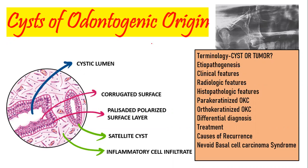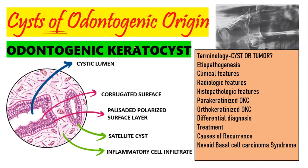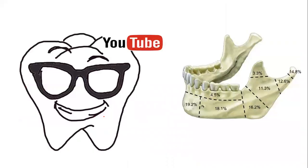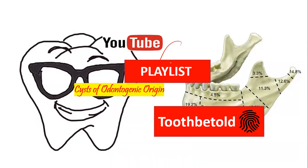Okay, so a very good evening to all of you. This video is on our last odontogenic cyst, which is the odontogenic keratocyst. This is a very difficult cyst to remember, and there are a lot of topics to study with it. So I'll make sure that you know all of these topics by the end of these videos. The time tags are in the description below, and for more such videos on odontogenic tumors and cysts, you can check out the playlist on the channel.